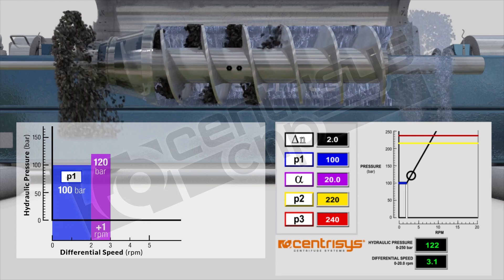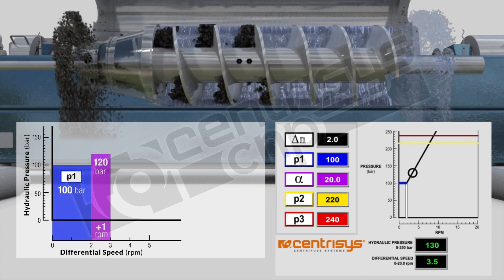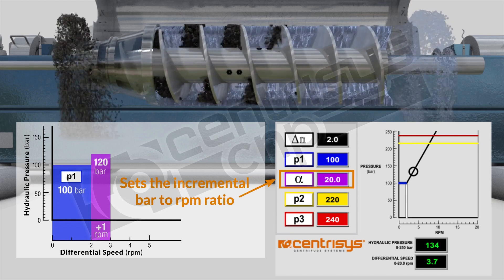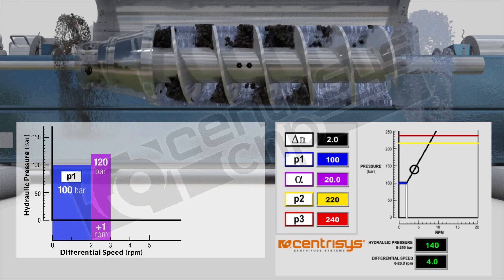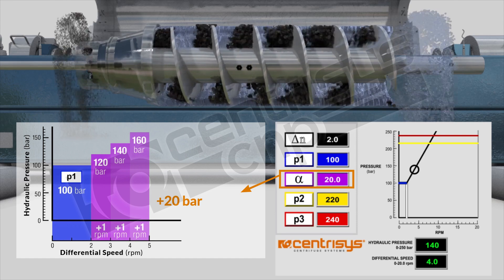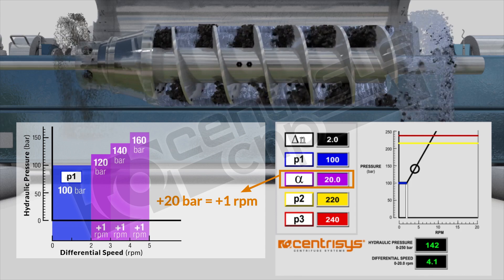We're at 120 bar and we're 1 rpm over the original because the third button alpha will adjust how much the differential speed goes up. 20 means 20 bar per rpm. For each 20 bars increase you will get another rpm on top of the base speed.